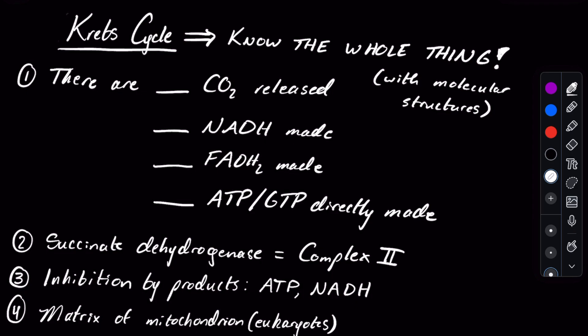Some of the most high yield things they test on are first and foremost the products of the Krebs cycle. It's really high yield to know that there are two molecules of CO2 released. Knowing where these are released in the Krebs cycle can be helpful, but just knowing that there are two can get you at least a little bit of the way there.